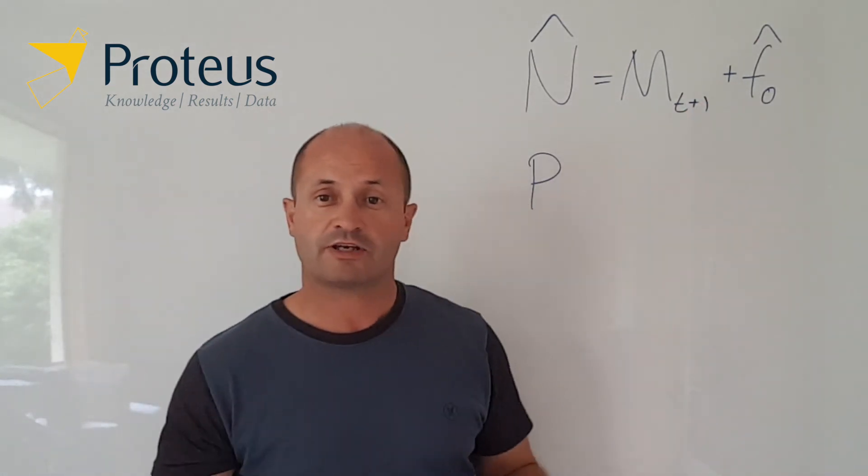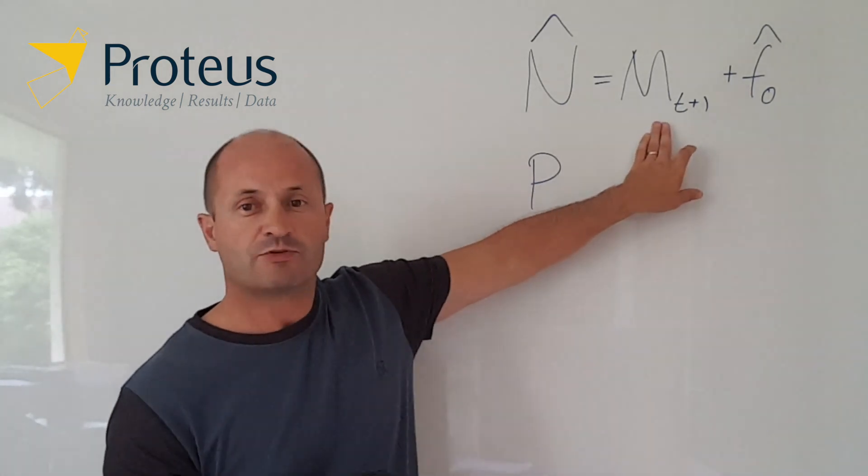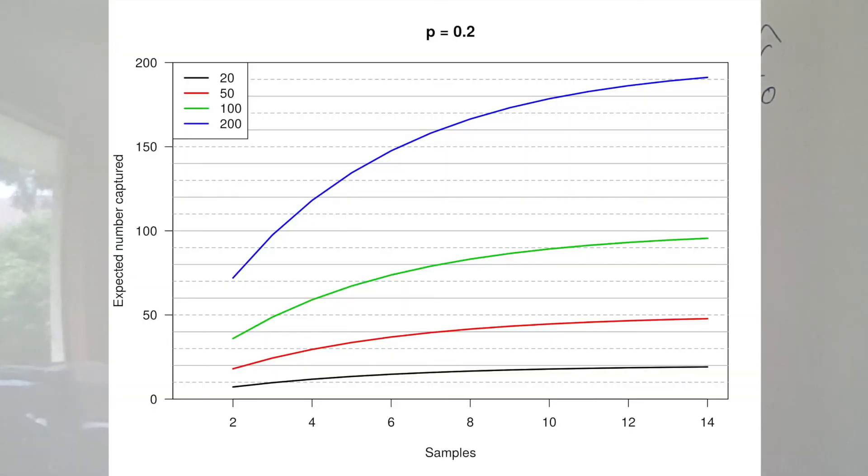We can also take these results and say if we do studies of this type, how many animals do we want to roughly capture in order to get a good estimate? Here's a couple of figures for you to look at. When detection or capture probability is about 0.2, if we're taking the situation where our CV for our number of unseen individuals is minimized at around about six samples, this graph here suggests that irrespective of how many animals there really are out there, we want to capture about 75% of them.